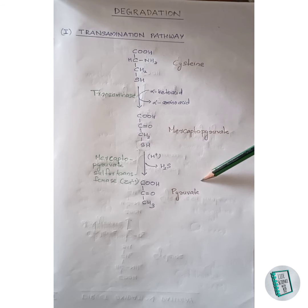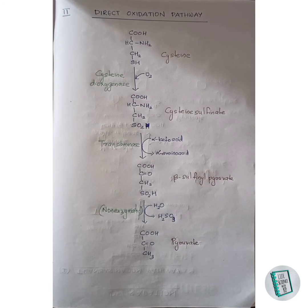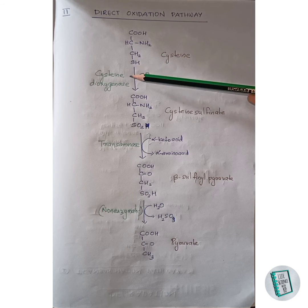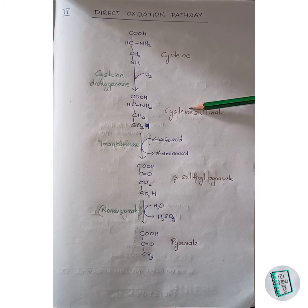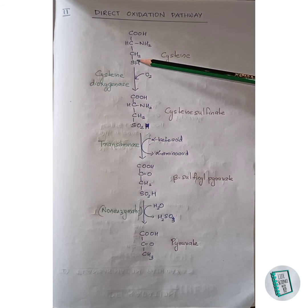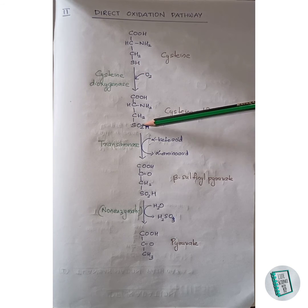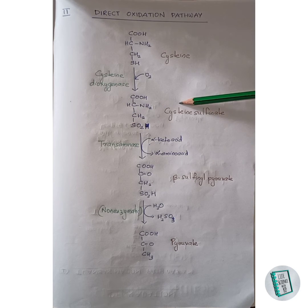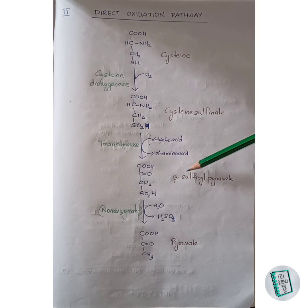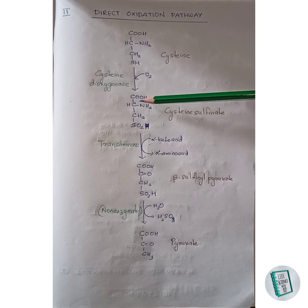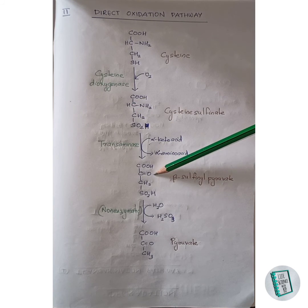Now let us look at the second pathway, which is the direct oxidation pathway. Here, cysteine in the presence of cysteine dioxygenase accepts two oxygen molecules and forms cysteine sulfonate. The two oxygens attach with the sulfur and form an SO₂H group. This cysteine sulfonate then undergoes transamination to form beta-sulfonyl pyruvate, where the NH₃ gets replaced by a keto group.